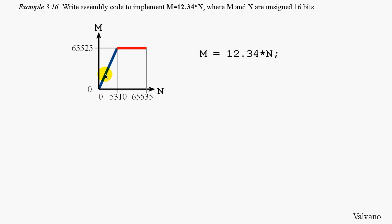If we plot this on the graph, we see that N is the input and M will be the output. And all will go well as long as N exists in the range of 0 to 5310. In that way, M will go from 0 to 65,000.